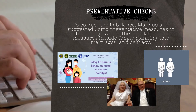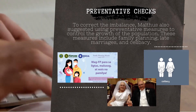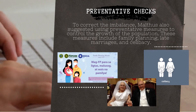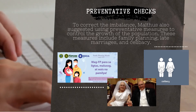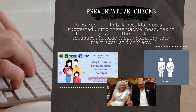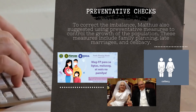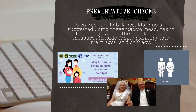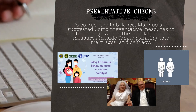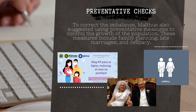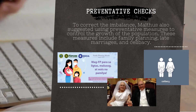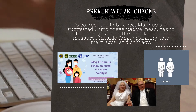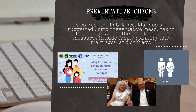Preventative checks, on the other hand, is a measure that aims to control the growth of population, taking preventative measures such as family planning and celibacy. These checks, both preventative and natural, would result in the Malthusian catastrophe, which would then bring the population back to a sustainable level.